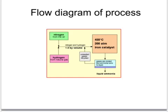Here's a flow diagram of the process. On the left we have the nitrogen which comes from the nitrogen gas in the air and the hydrogen which comes from natural gas. They're mixed together in the right proportions to react together, one of nitrogen to three volumes of hydrogen.